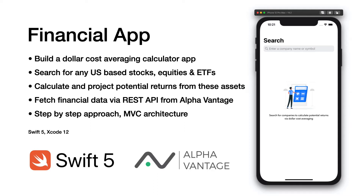In this course, we will learn to build a financial app. This is a dollar cost averaging calculator that allows investors to search for any US-based stocks, equities, and ETFs. This tool allows you to calculate and project potential returns from these assets. We do this by fetching financial data via REST API from Alpha Vantage, which is a stock API provider.